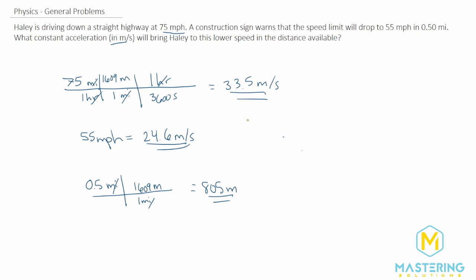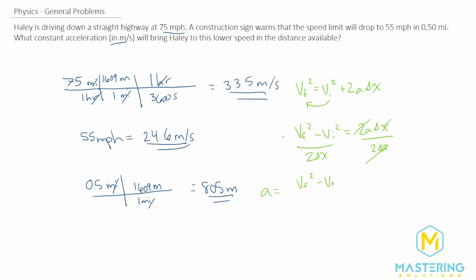So we have 805 meters for the distance available. Now that everything is in standard units, we use a kinematic equation to solve for acceleration. Since we have no time, we use the equation that excludes time: v_final² = v_initial² + 2a·Δx. To isolate acceleration, we subtract v_initial² from both sides and then divide both sides by 2·Δx, giving us: a = (v_final² − v_initial²) / (2·Δx).